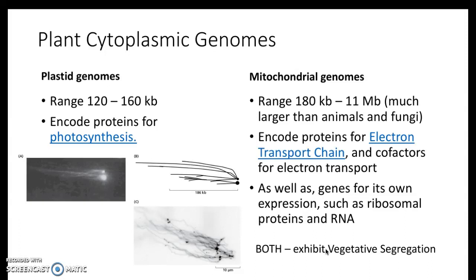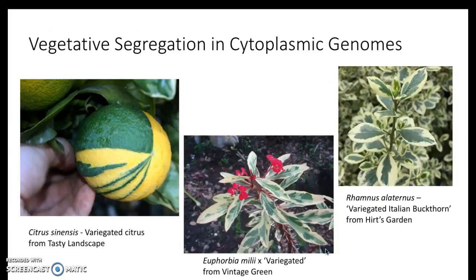I remember mentioning it — in plant propagation with Dr. Ralsup, we discussed and saw the difference in these. We know a lot of people like buying variegated plants horticulturally. Well, how are those done through breeding? Today we'll talk just briefly about how that even happens to begin with in nature. So vegetative segregation is the word — vegetative segregation in cytoplasmic genomes, specifically of plastid genomes.